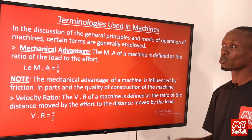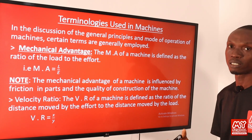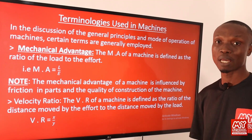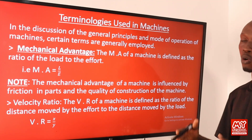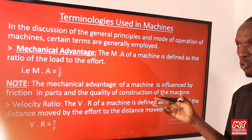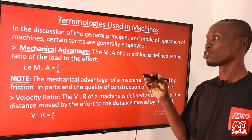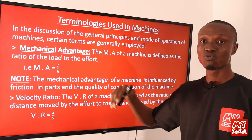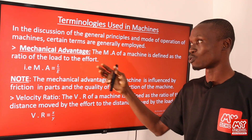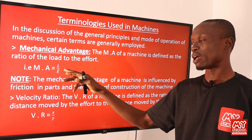There are some terms normally used when describing machines in physics. The first term is mechanical advantage — another word for mechanical advantage is force ratio. The mechanical advantage of a machine is defined as the ratio of the load to the effort. The load refers to the resisting force, while the effort is the applied force — the force applied to overcome the resisting force. Mathematically, mechanical advantage equals load over effort.